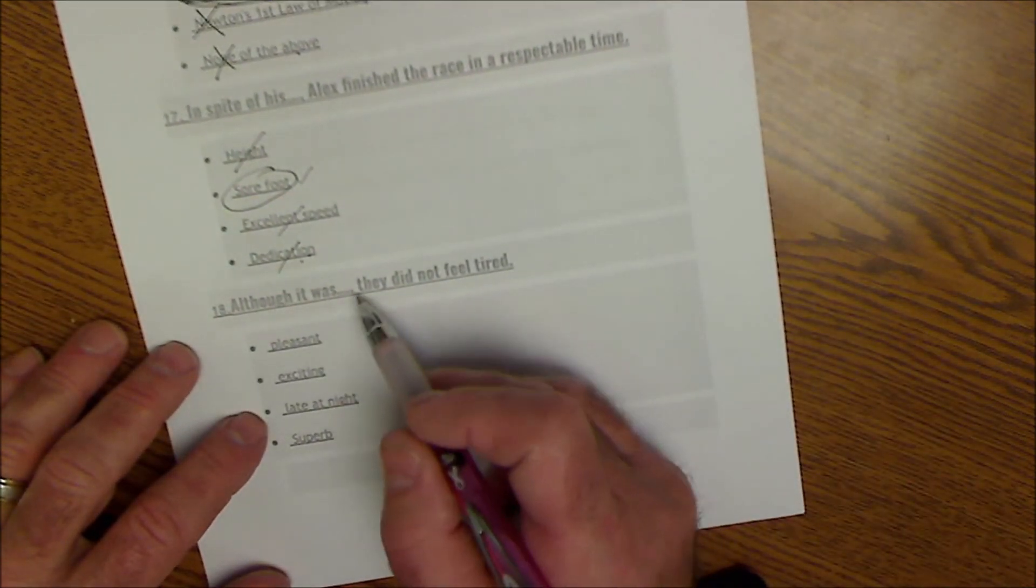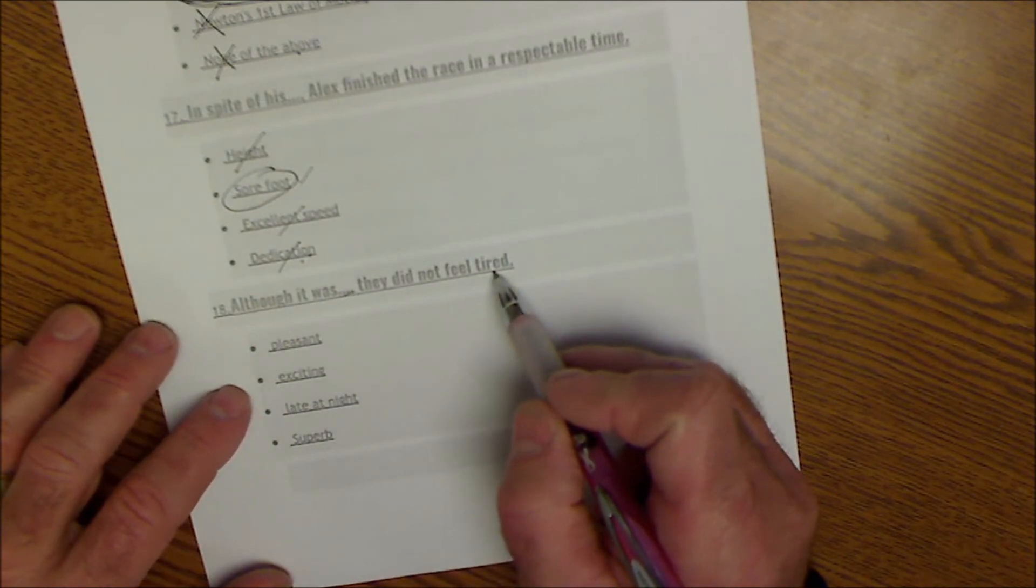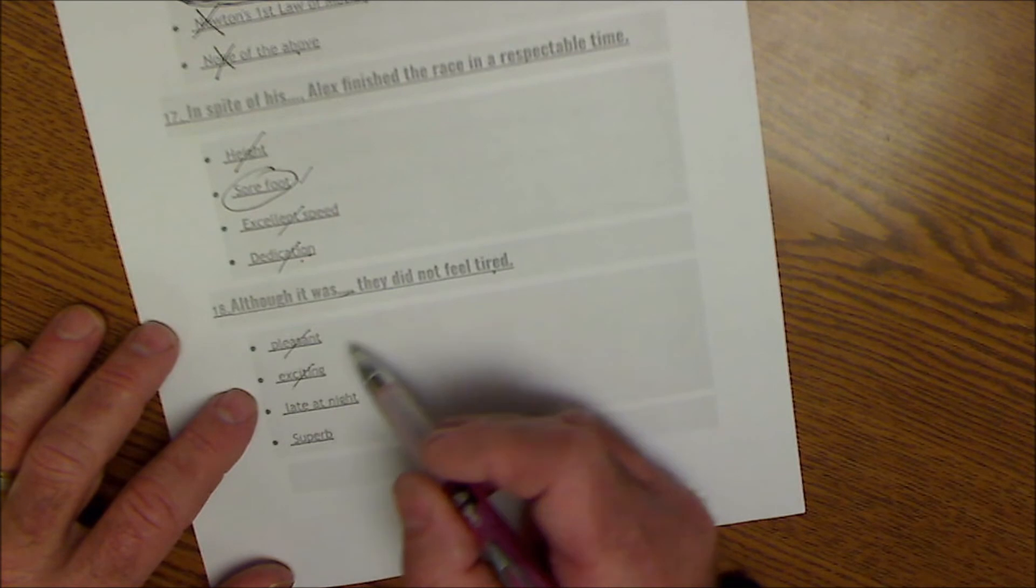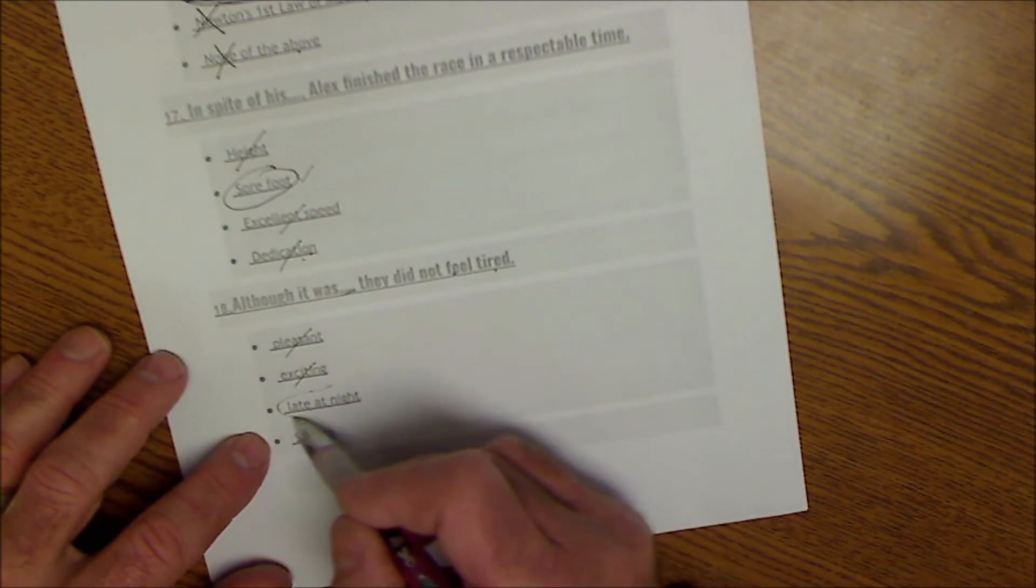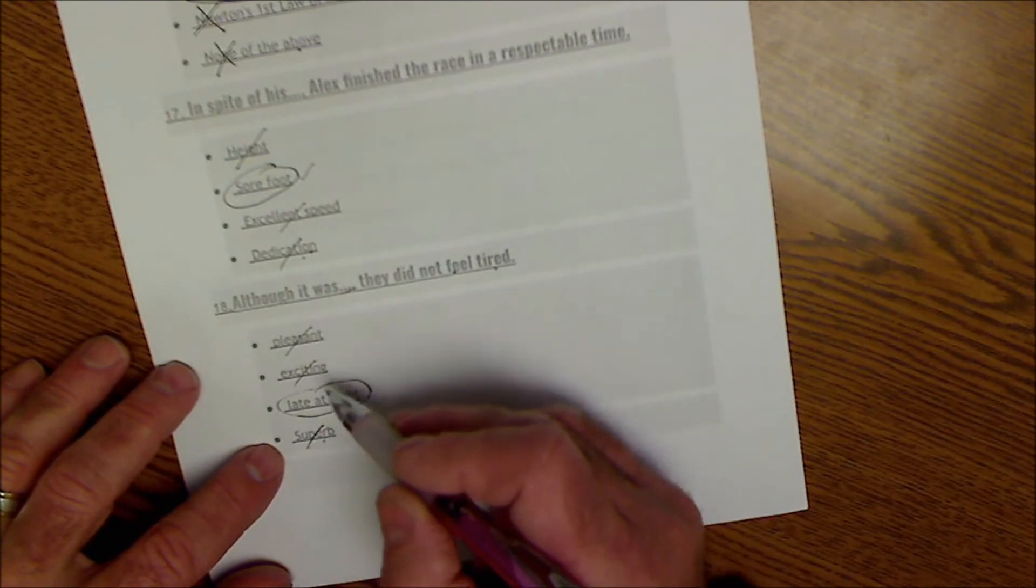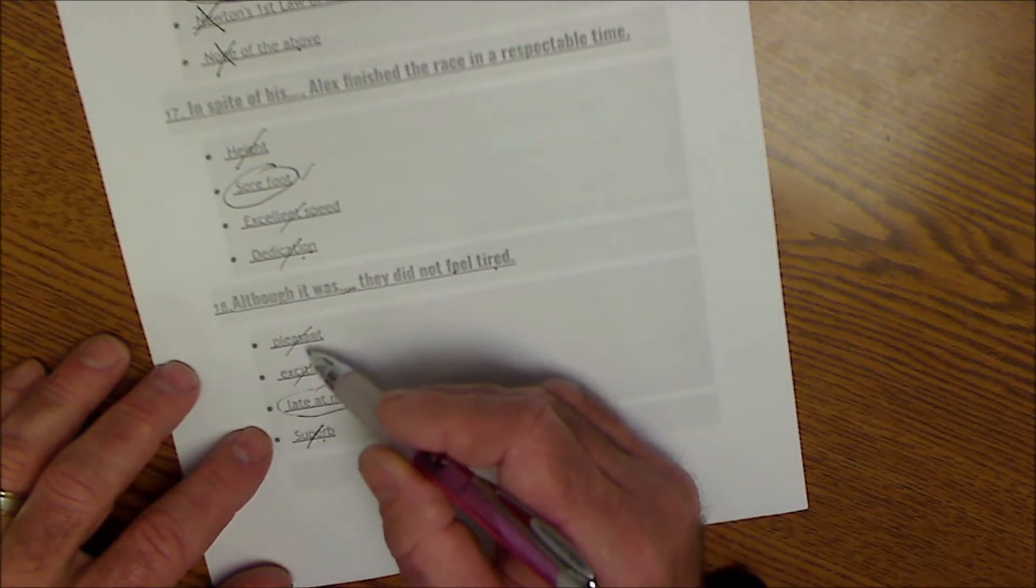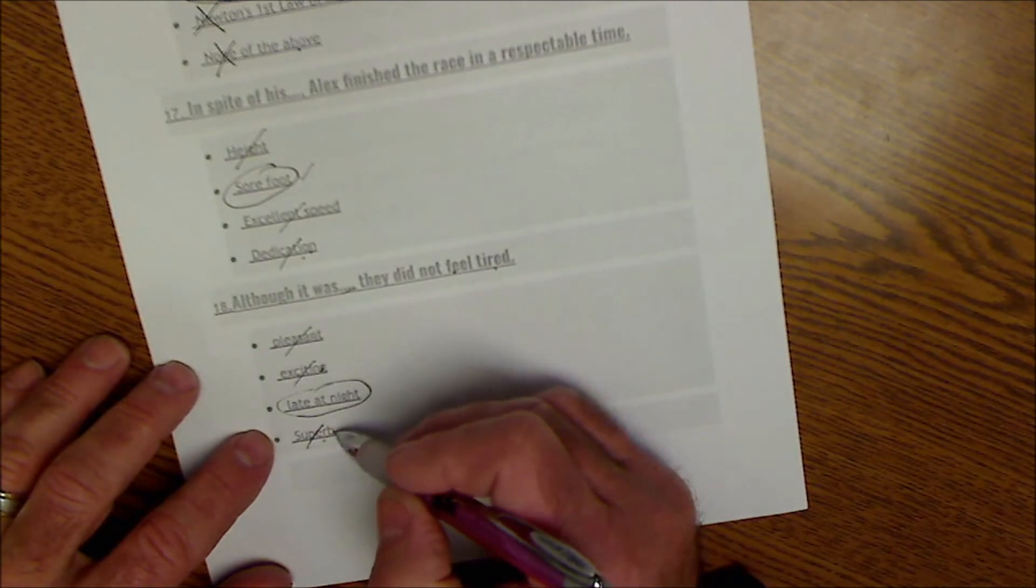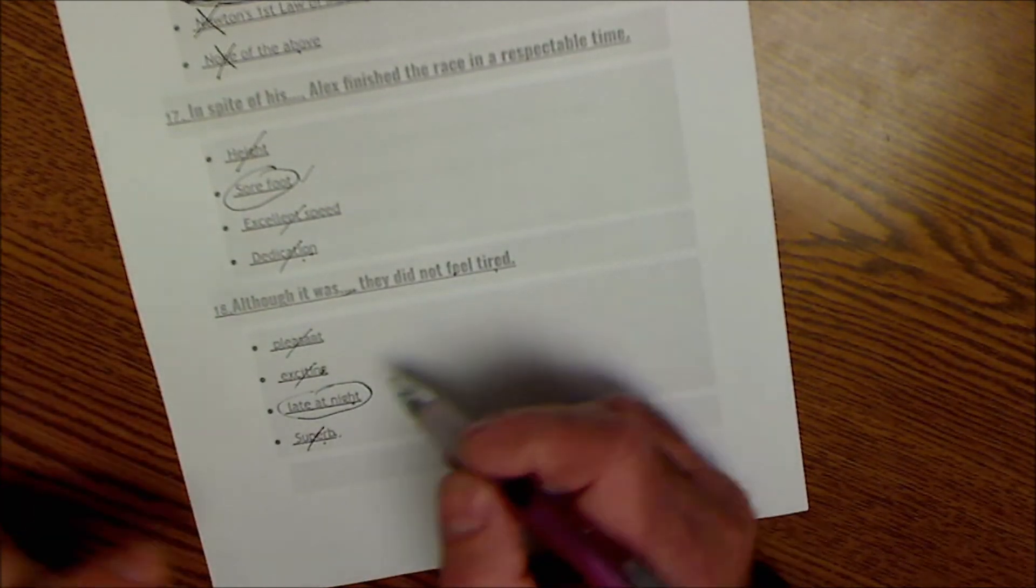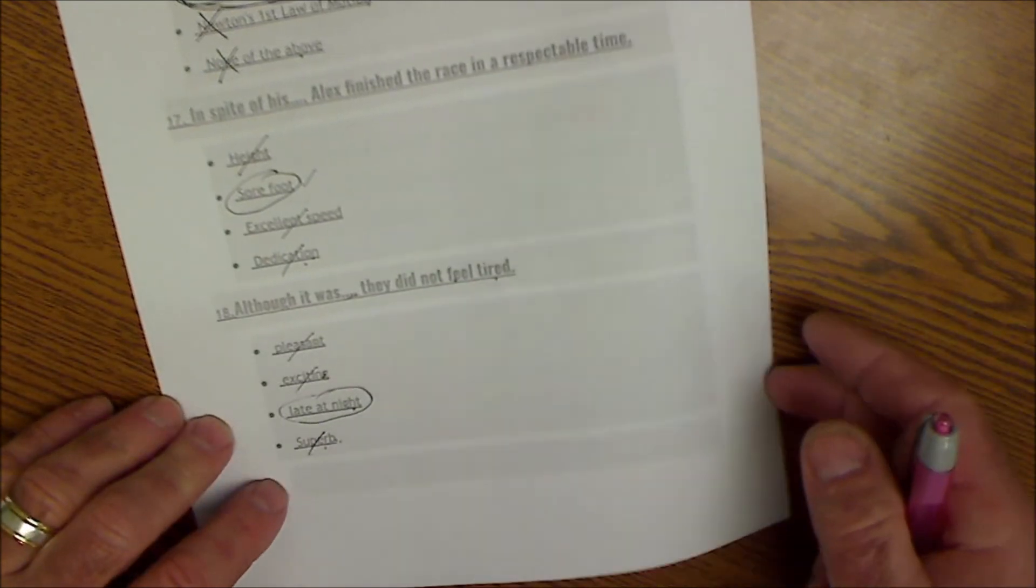Although it was blank, they did not feel tired. Well, pleasant has nothing to do with feeling tired. Excited has nothing to do with feeling late at night does. So that makes sense. Superb, pleasant, exciting are all similar things. They're all positives. Late at night is something. So I think this has to do with negatives and positives. So the answer is late at night.